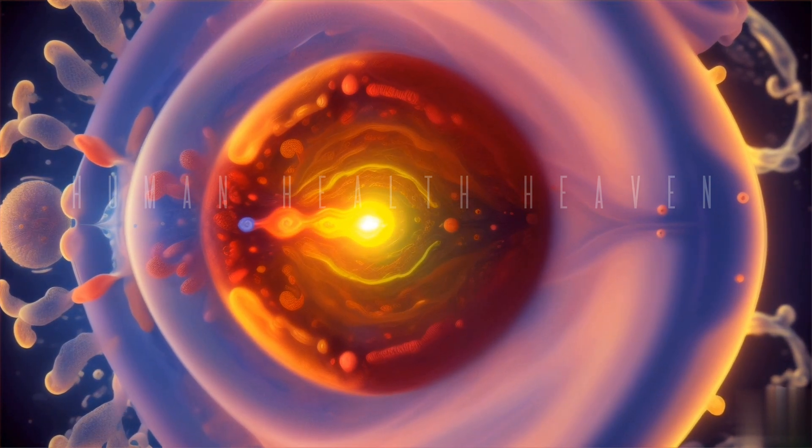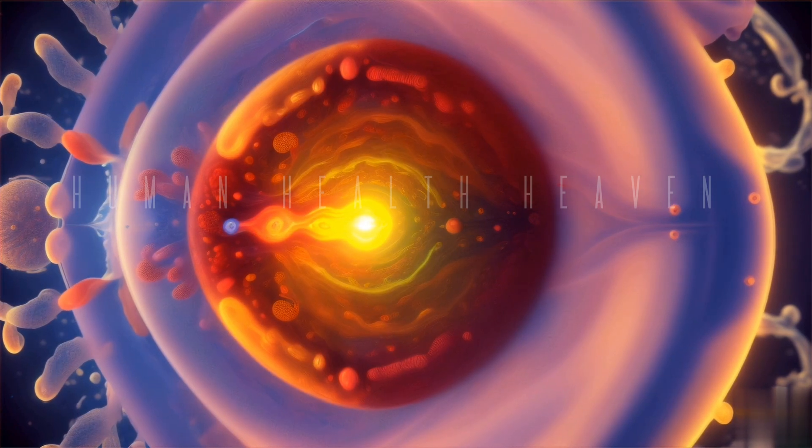White pulp: It contains clusters of red blood cells, white blood cells, and helps in immunity.